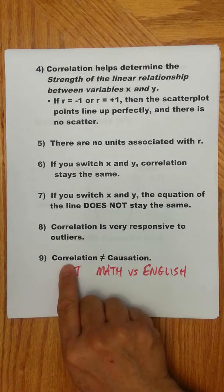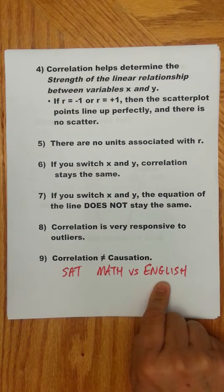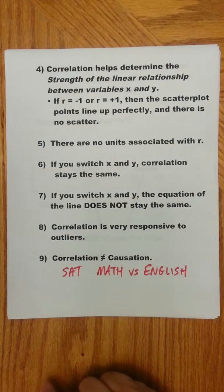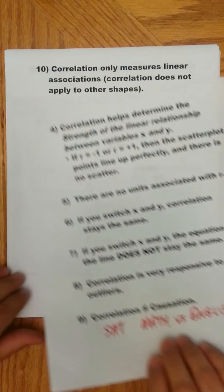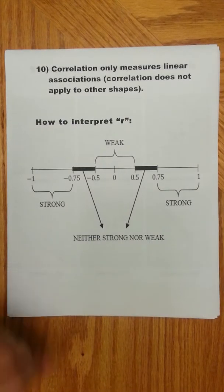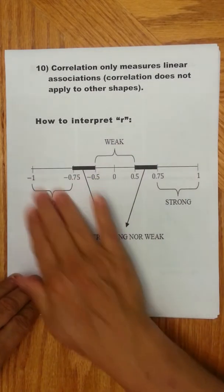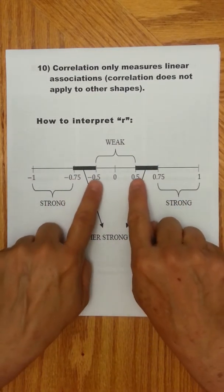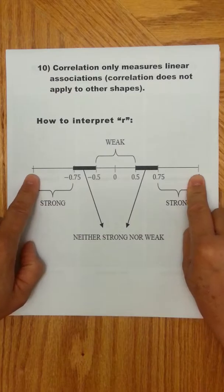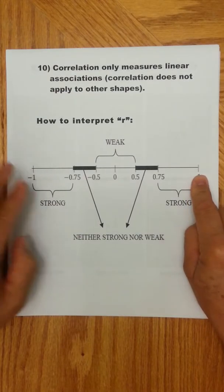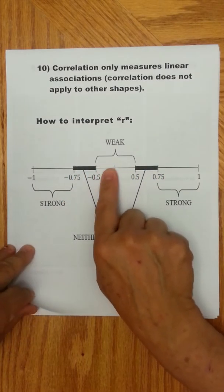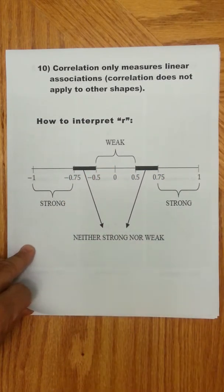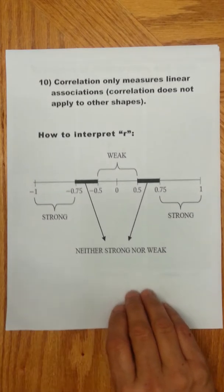The lurking variables could be, for example, maybe somebody's just smart. You know? It doesn't matter if they're doing math or English. They're smart. They're good at everything. Or maybe they're a good student. So they'll try a lot harder. They'll study hard no matter what subject it is. So you've got these lurking variables that are actually linking the two variables. But even though they move together very strongly, and that's the correlation, it doesn't mean that one causes the other. So be very careful about that. And finally here, correlation only measures linear associations. No other shape.